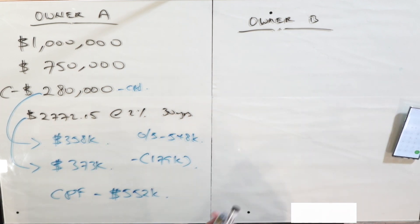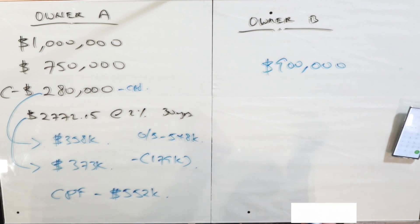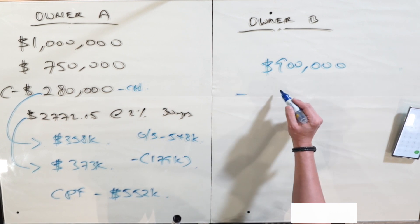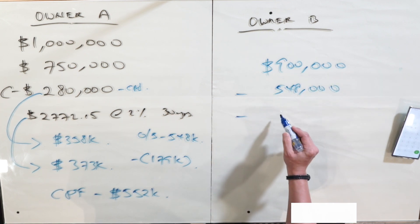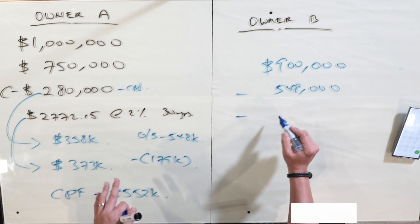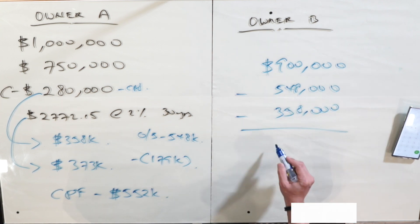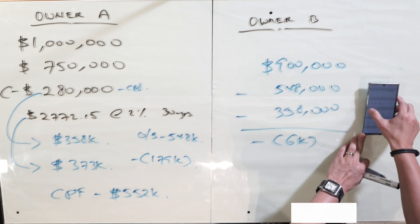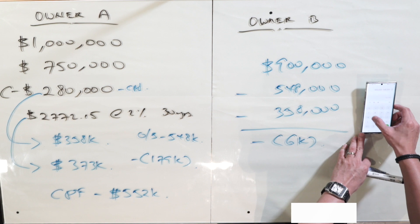What about for owner B? So owner B bought a wrong property. He could only sell this property for $900,000, which is basically $100,000 below what he initially purchased. So the same thing, he had to less off whatever he owed in the bank, the outstanding loan which is the same amount of $548,000, and also return back to the CPF the same amount of $358,000. And you realize that for this same buyer, he's also having a negative sale of $6,000.